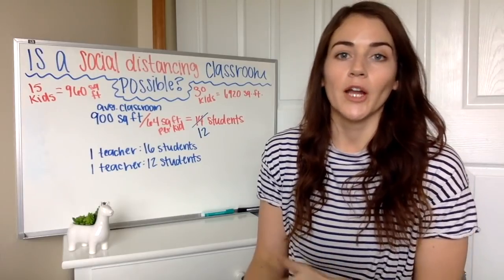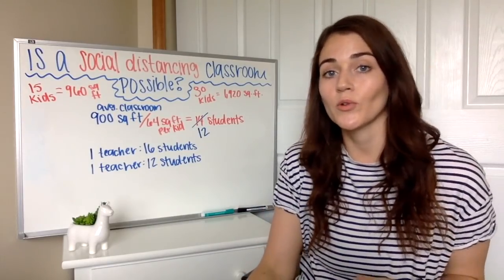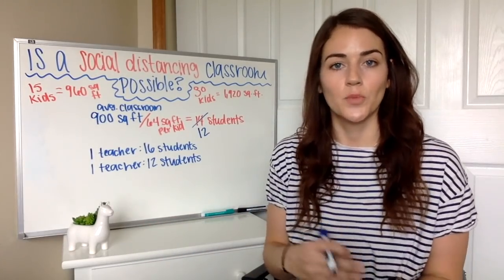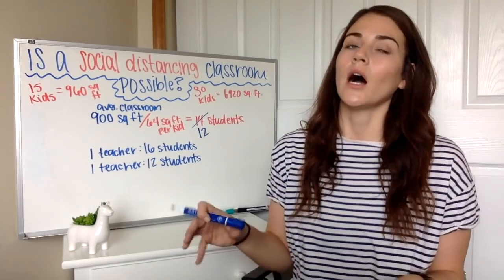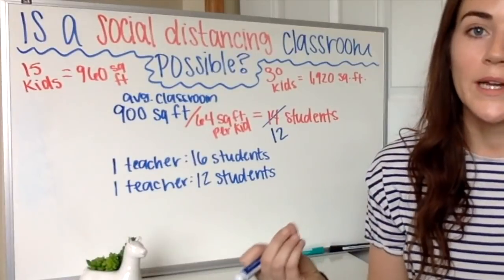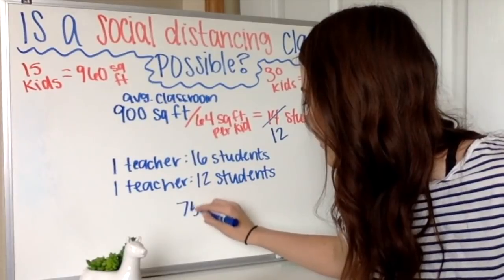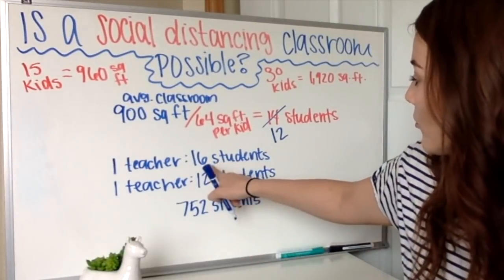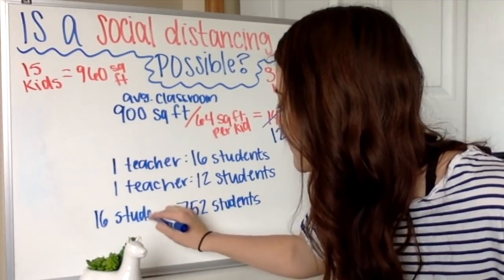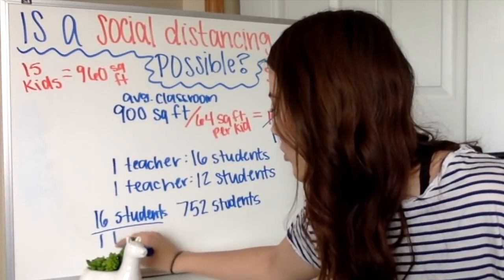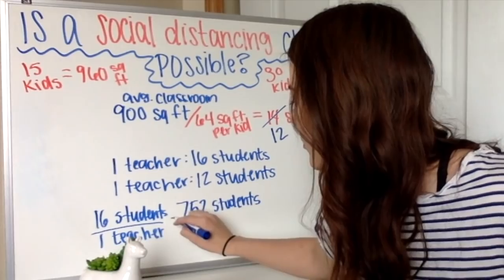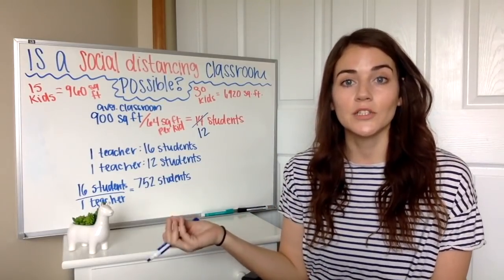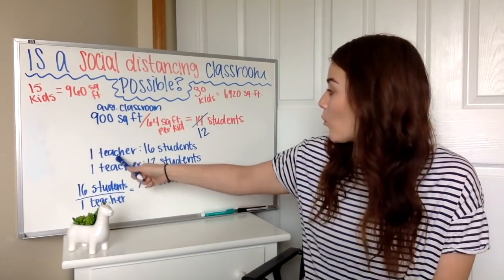I did all these stats for high schools in the United States just to keep everything similar. With social distancing, the maximum one teacher can take is 12 students. So we have a new ratio of one teacher to 12 students. I looked up the average high school student enrollment, and found the average U.S. high school has 752 students. So I'm setting up a proportion: if 16 students equals one teacher, then 752 students equals how many teachers?